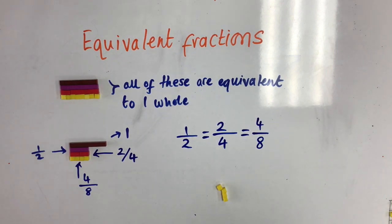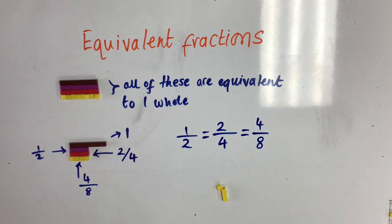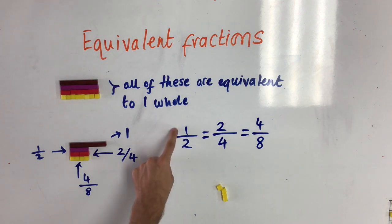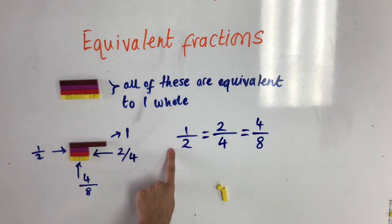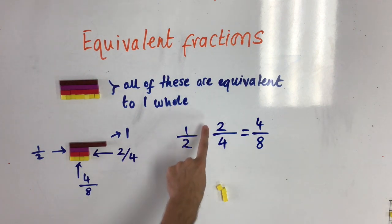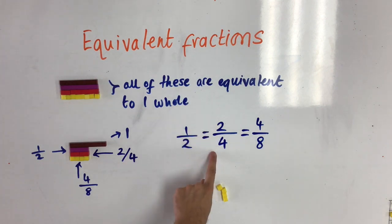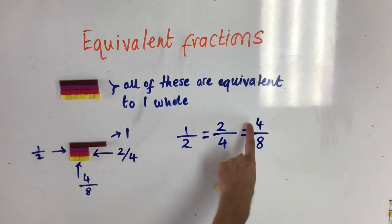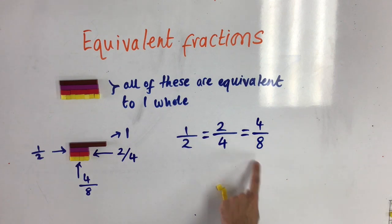I wonder if you can think of any other equivalent fractions by looking at these patterns, because you can see here that one is half of two, two is half of four, and four is half of eight.